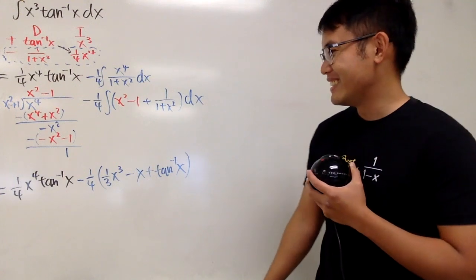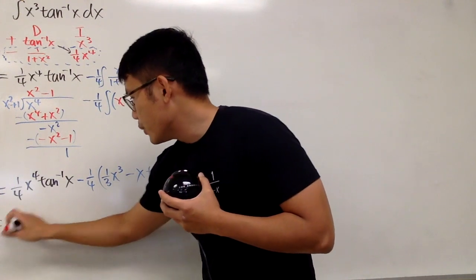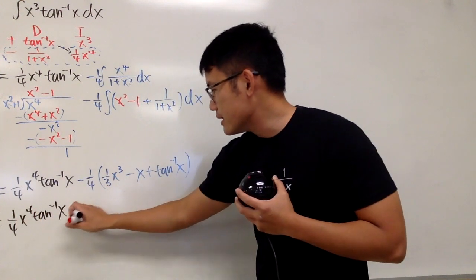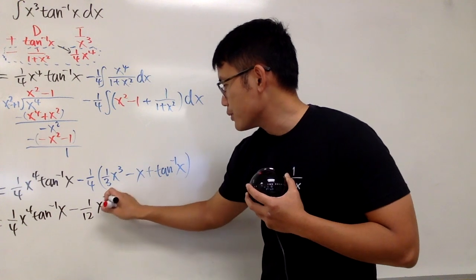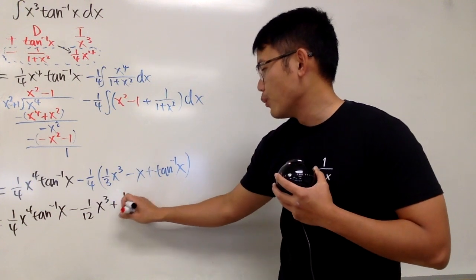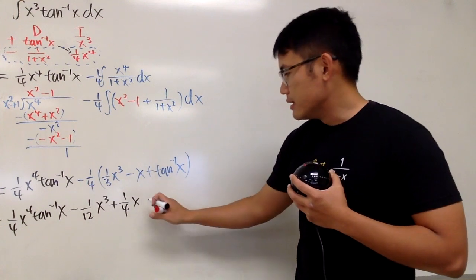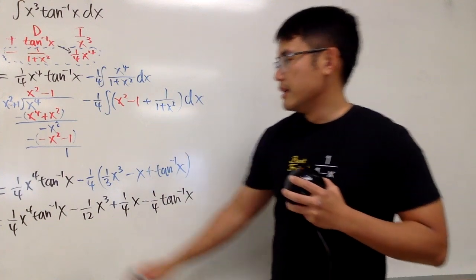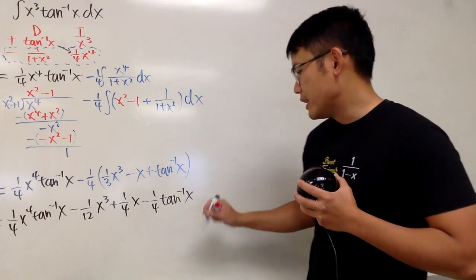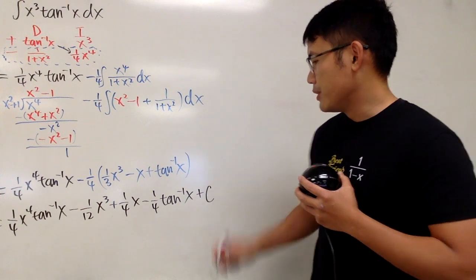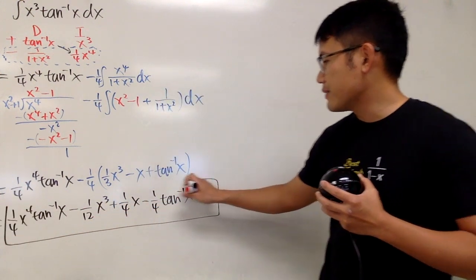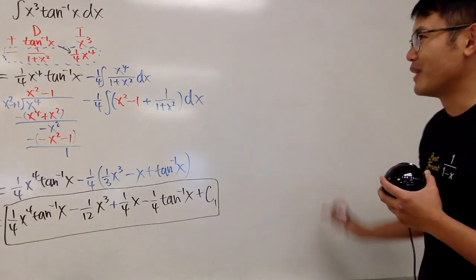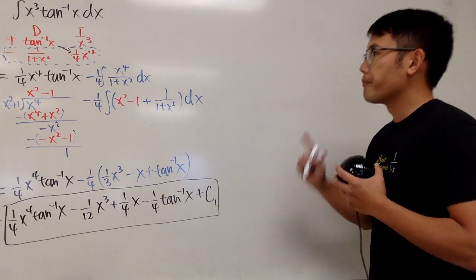Now distributing the negative 1/4, our final answer for the regular method is: 1/4 x⁴ arctan(x) minus 1/12 x³ plus 1/4 x minus 1/4 arctan(x), plus a constant C₁. I'll label it C₁ because I'll use another constant later for the power series answer.